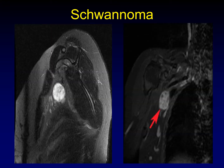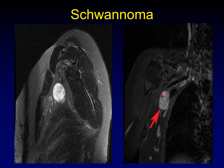Another example — this time a sagittal T2 and a coronal T1. You can see that it is elongated along the length of the nerve.